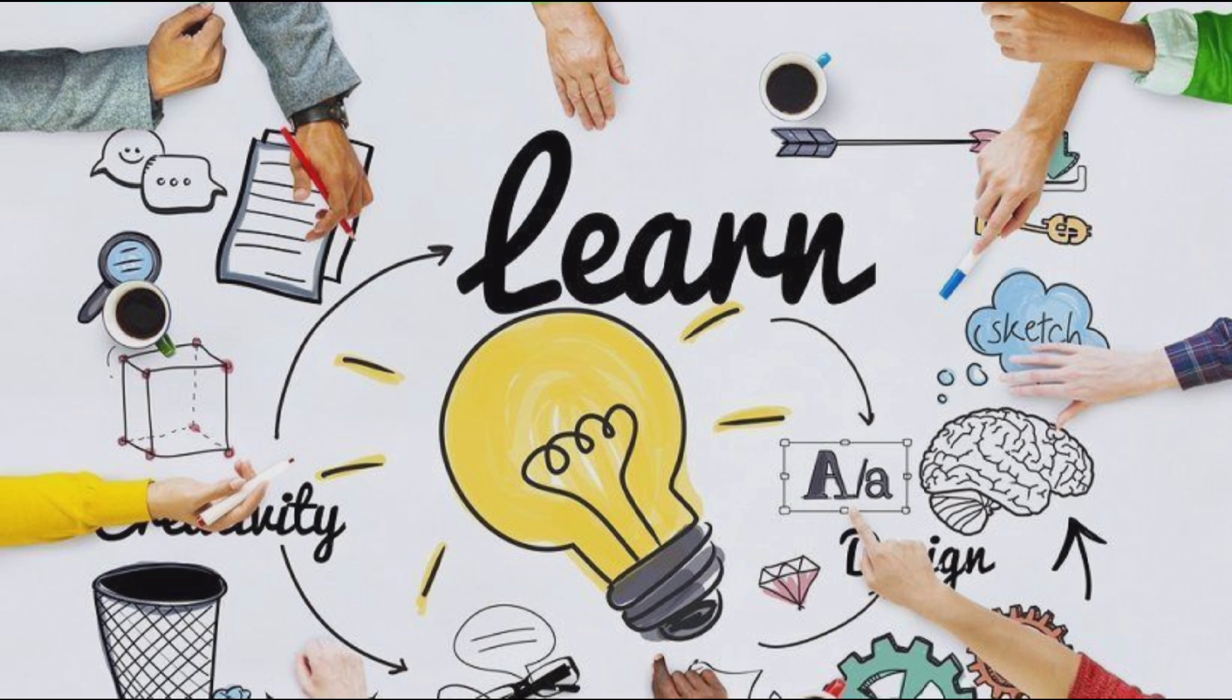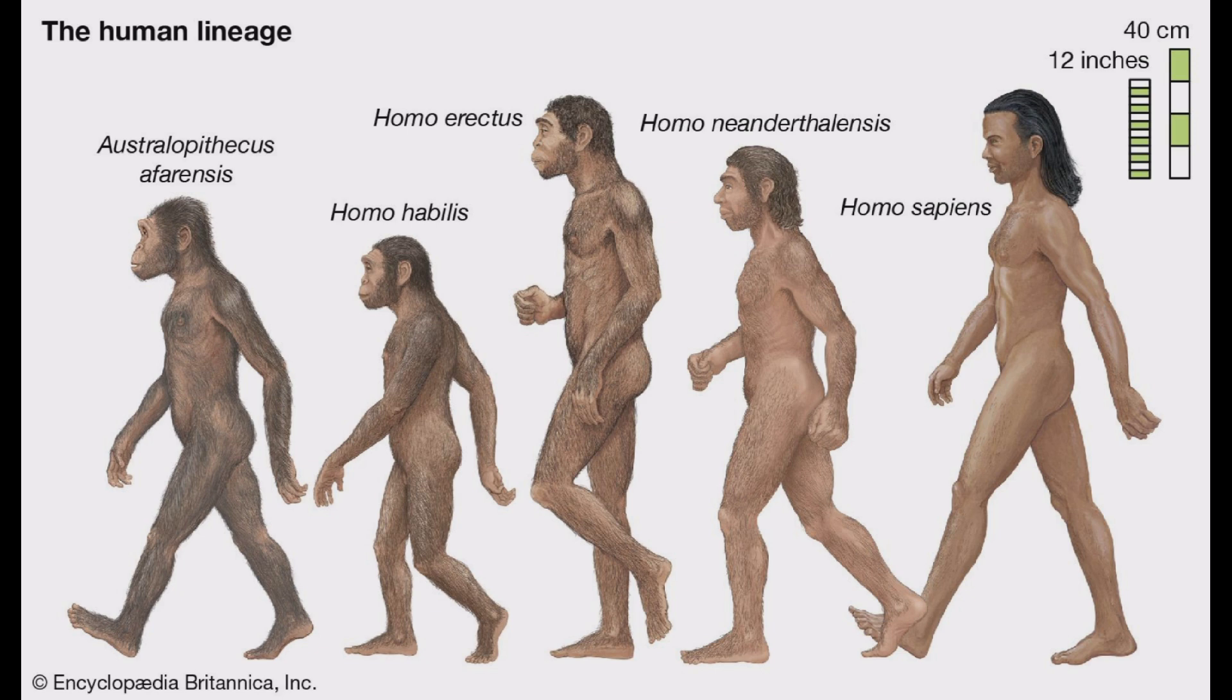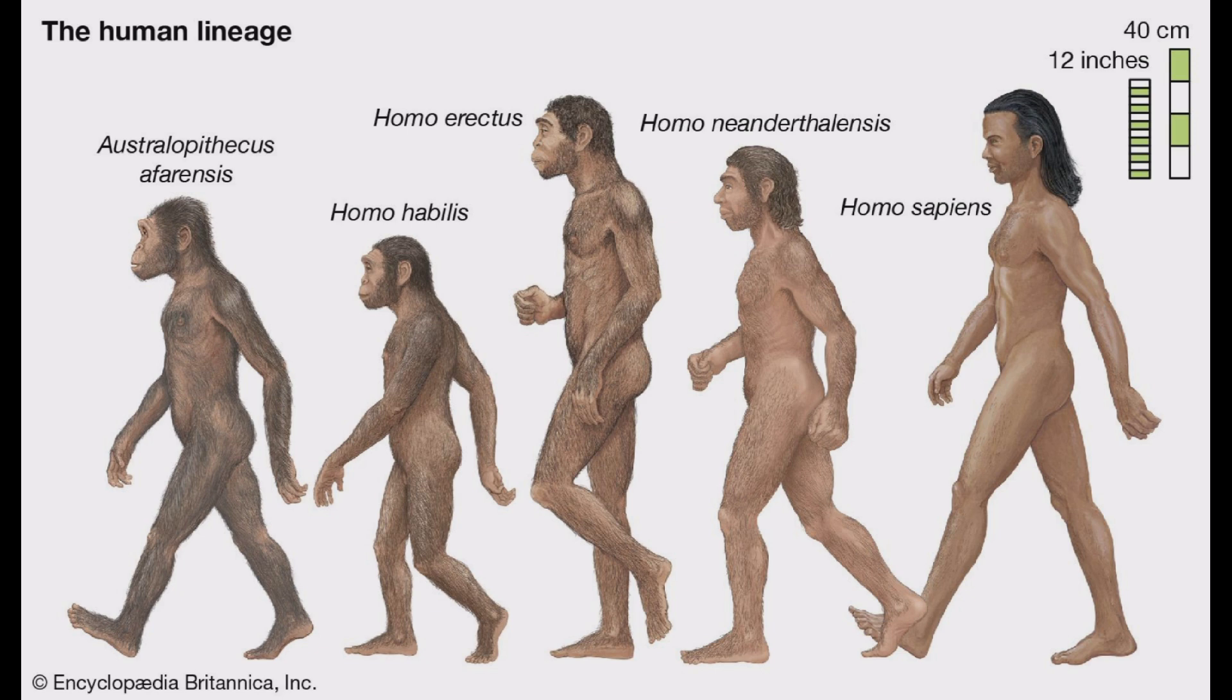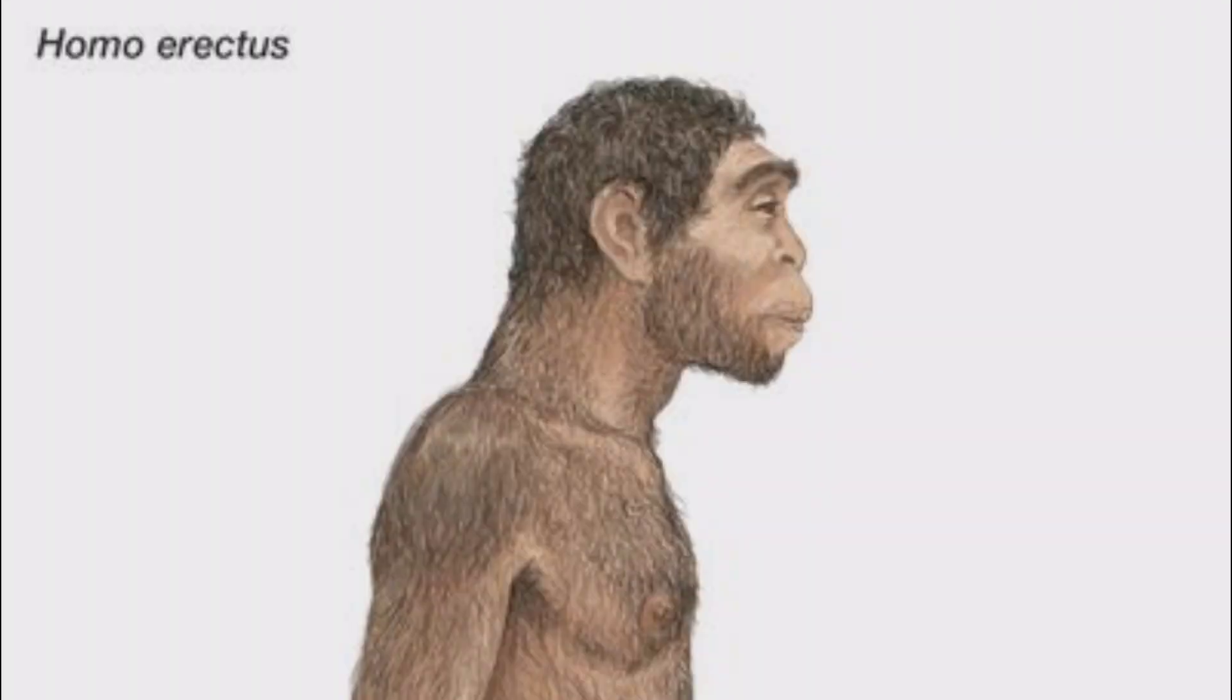To understand this phenomenon, we need to look back in time to the evolution of our species. Anthropological studies reveal that our earliest ancestors, Homo habilis and Homo erectus, lived around 1.9 million years ago.